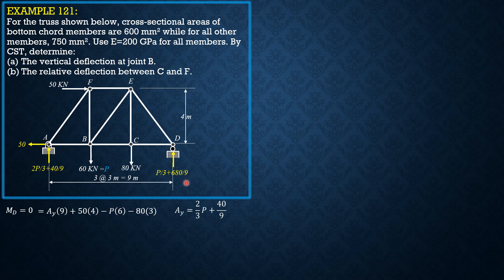You are expected to know how to compute the reactions because that is statics — this is structural theory. We begin at joint A, summation of forces Y, to solve for the force in member AF in terms of P and the constant. The result is negative 5P over 6 minus 50 over 9. Then summation of forces X: SAB plus (negative 5P/6 minus 50/9) times 3/5 minus 50 equals 0.